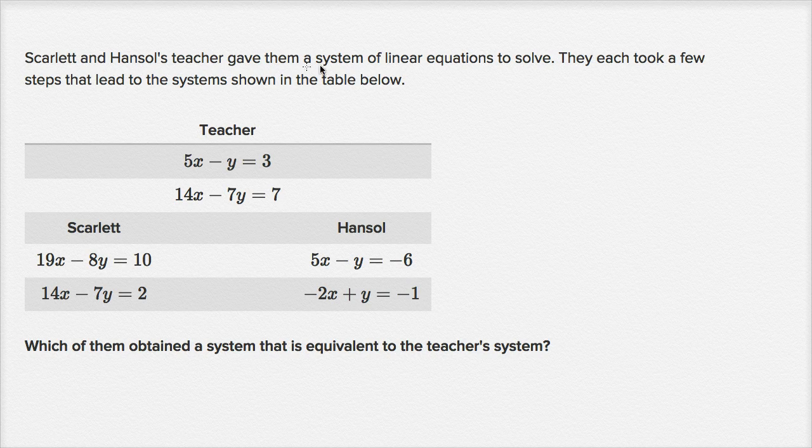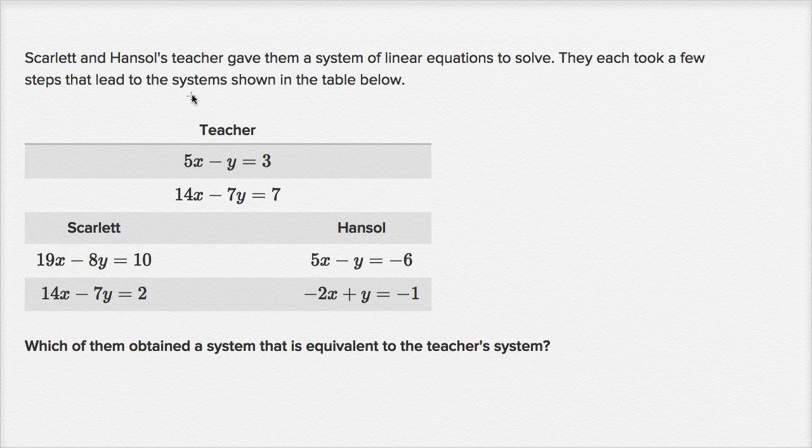Scarlett and Hansel's teacher gave them a system of linear equations to solve. They each took a few steps that led to the systems shown in the table below. So this is the teacher system, this is what Scarlett got after taking some steps, this is what Hansel got. Which of them obtained a system that is equivalent to the teacher's system?